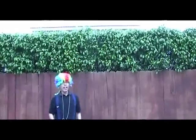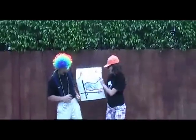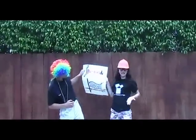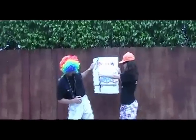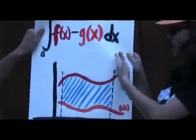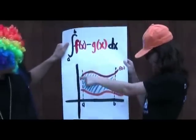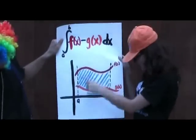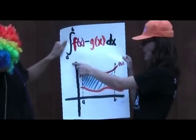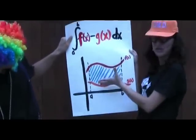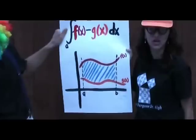That's right, Anti-Derivative Ashley. You can also find the area bounded by two functions. You said it, Calculus Carl! We're using this formula: the integration from A to B of f of x minus g of x dx, where f of x is your top function, g of x is your bottom function, and A and B are the beginning and end points of the region that you're finding the area of.